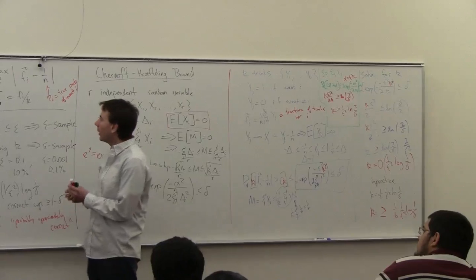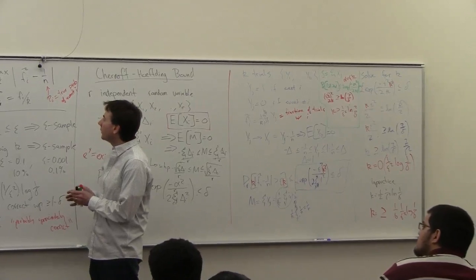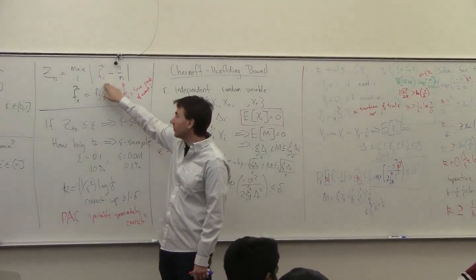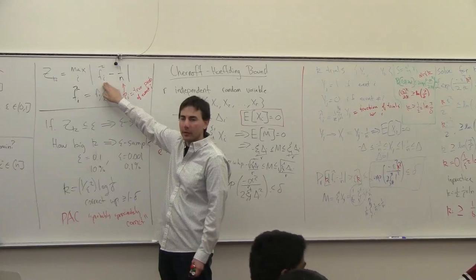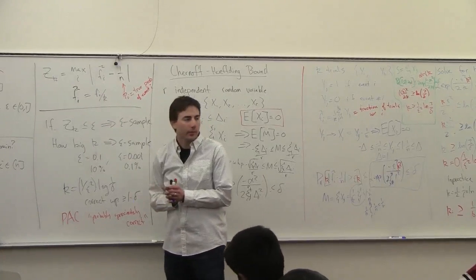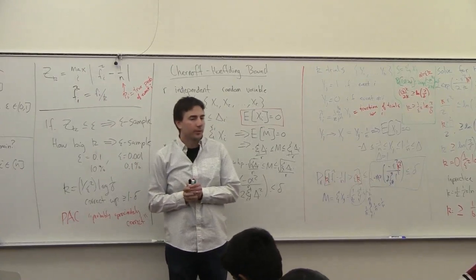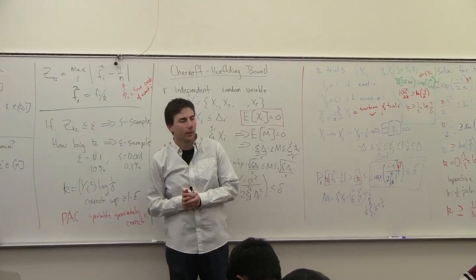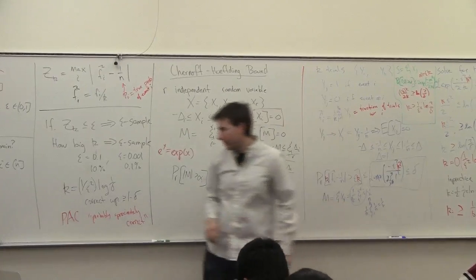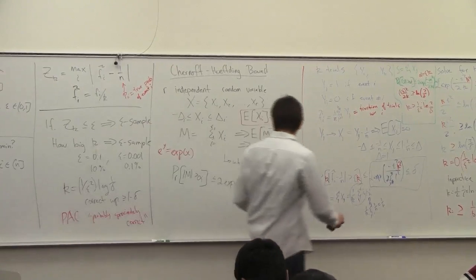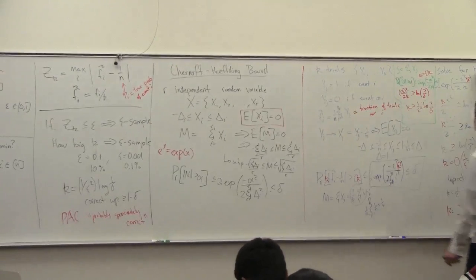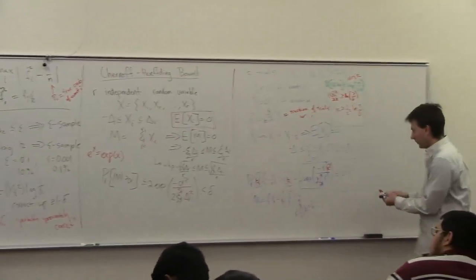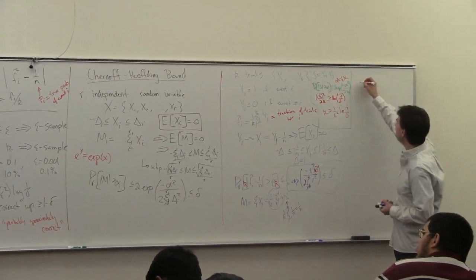There's one more thing I want to say. I looked at just one of these bins — just the i-th bin fi. But I want this to be true for all of the bins. So how do I get this to be true for all of the bins at once? I'm going to again leverage the probably approximately correct framework here.